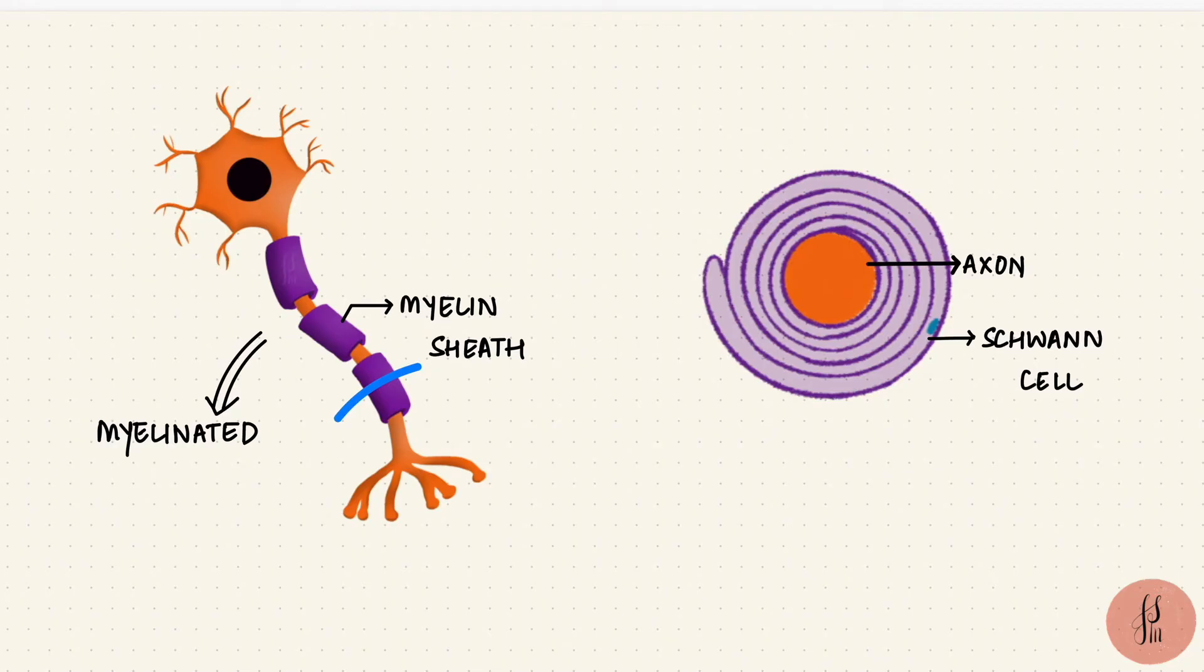The winding pushes the Schwann cell cytoplasm along with its nucleus towards the periphery. That forms a Schwann cell sheath, or the neurolemma, or the neurolemmal sheath. That's the outermost layer.